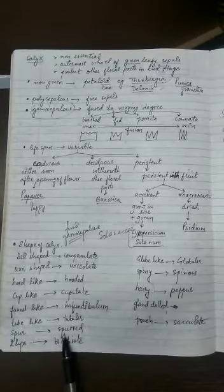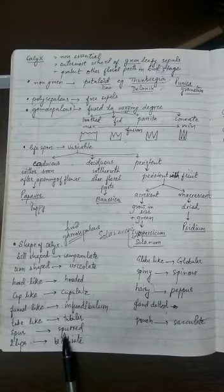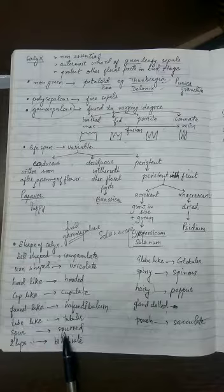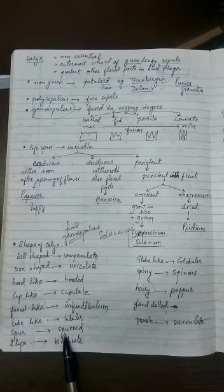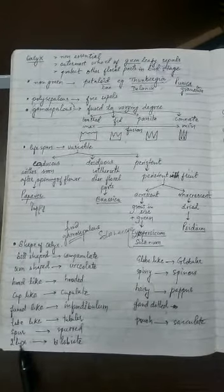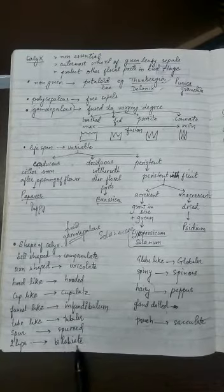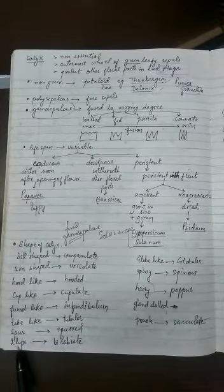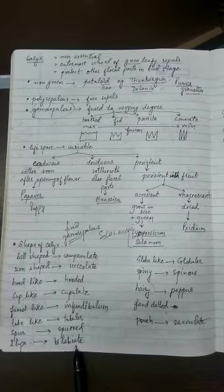Tube-like is called as the tubular. Tubular is found in Verbena. Spur is called as the spurred one. And spurred type of calyx is found in Delphinium, garden Nasturtium. I have told about these names before also. In the case of Tulsi family, you will find two lips are there. That is called as the bilabiate.